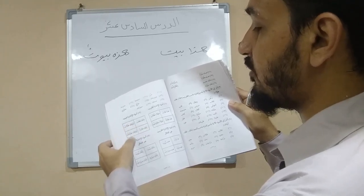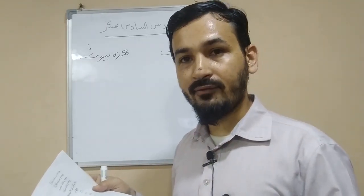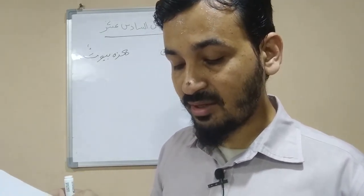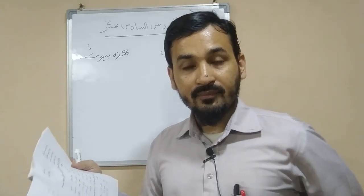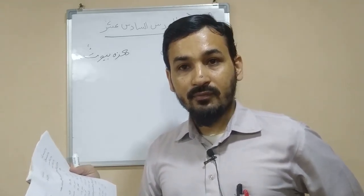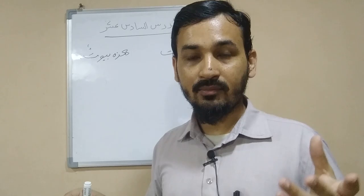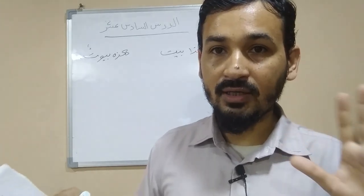Now: ism al-ishara lil-qarib and ism al-ishara lil-ba'id. Example: 'haadha talib, hadhihi talibah, ha'ula'i tullab, ha'ula'i talibat' — and for far: 'dhalika talib, tilka talibah, ula'ika tullab, ula'ika talibat.' Now: ism al-ishara lil-qarib ghayru al-'aqil — the near demonstrative for inanimate/non-rational things.